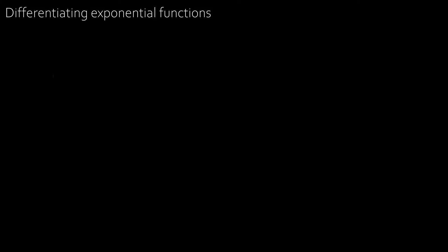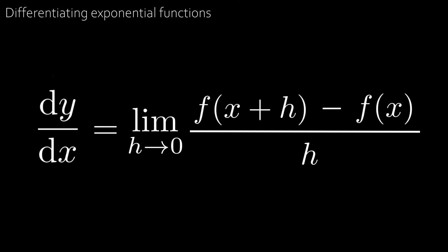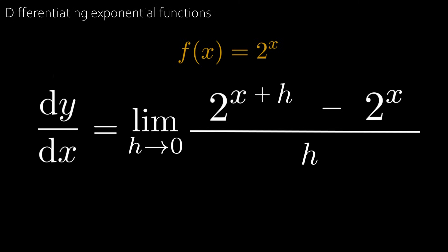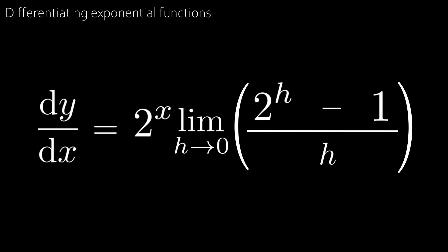Now let's try to differentiate exponential functions. Say we have y = 2ˣ — what is dy/dx? We recall that dy/dx equals the limit as h approaches 0 of [f(x+h) − f(x)] / h. Substituting f(x) = 2ˣ gives the limit as h→0 of (2^(x+h) − 2ˣ) / h. Using the exponent rule, 2^(x+h) = 2ˣ · 2ʰ, and factorising the numerator gives 2ˣ · (2ʰ − 1) / h. Since 2ˣ has no dependence on h, we can move it outside the limit.